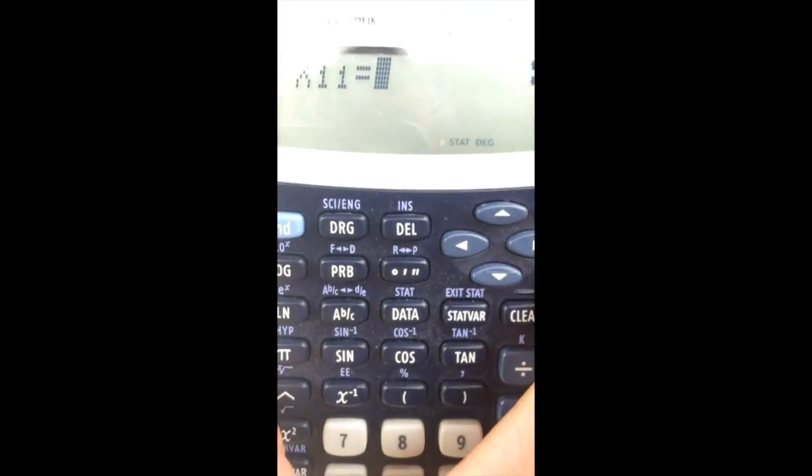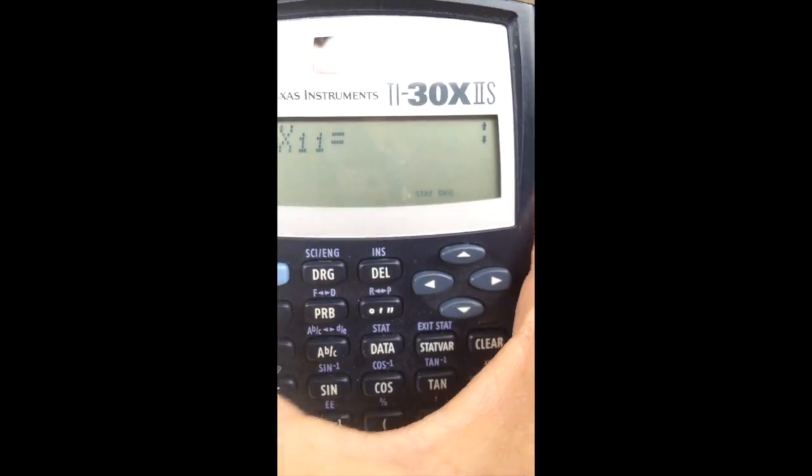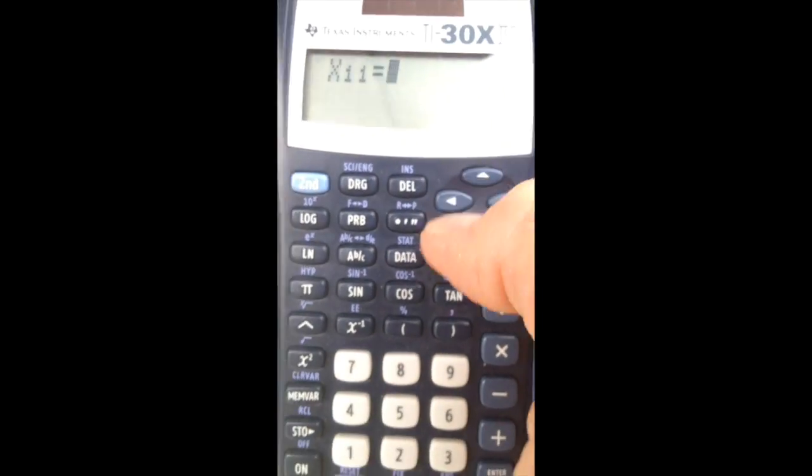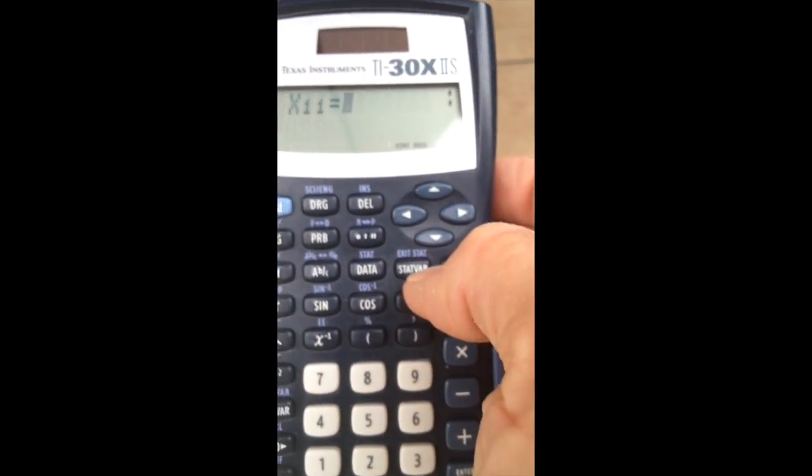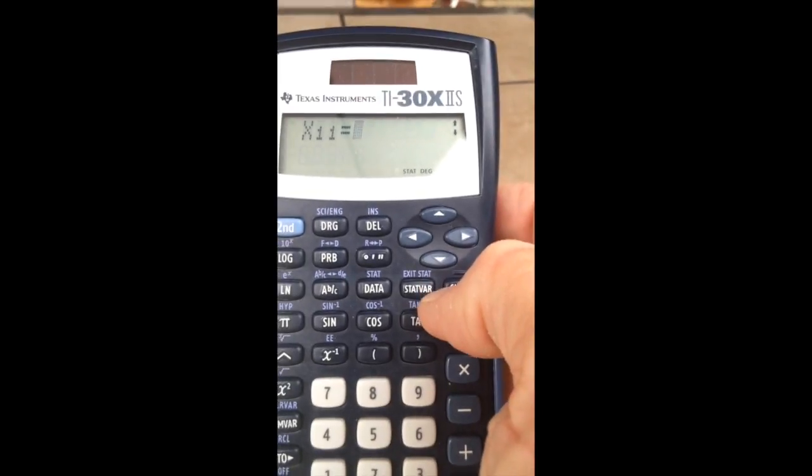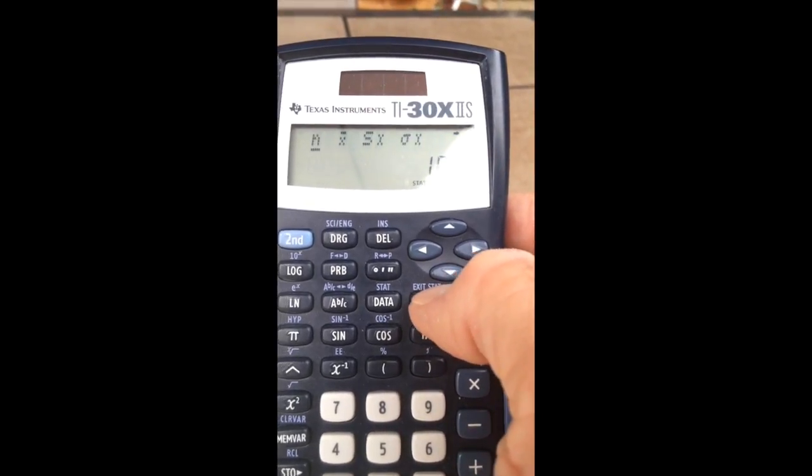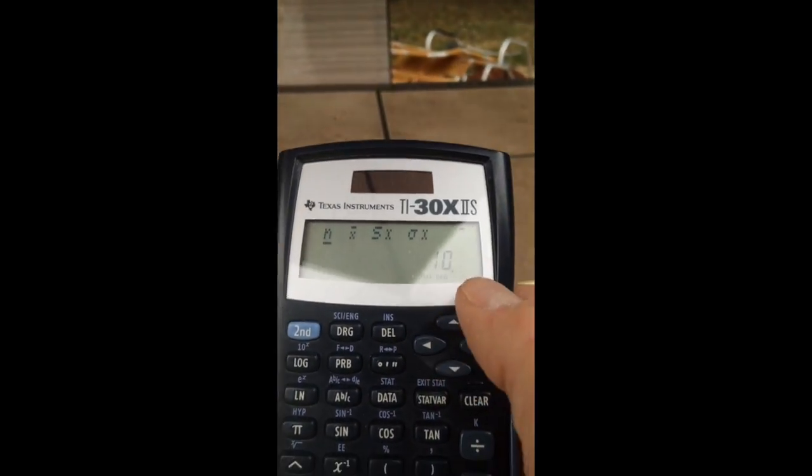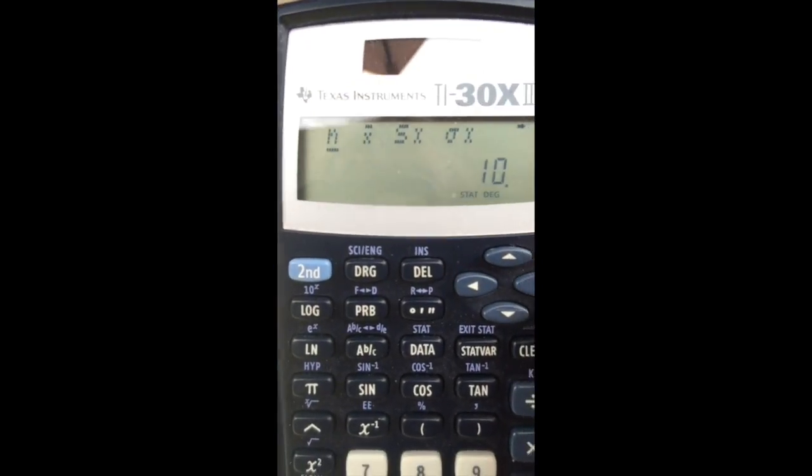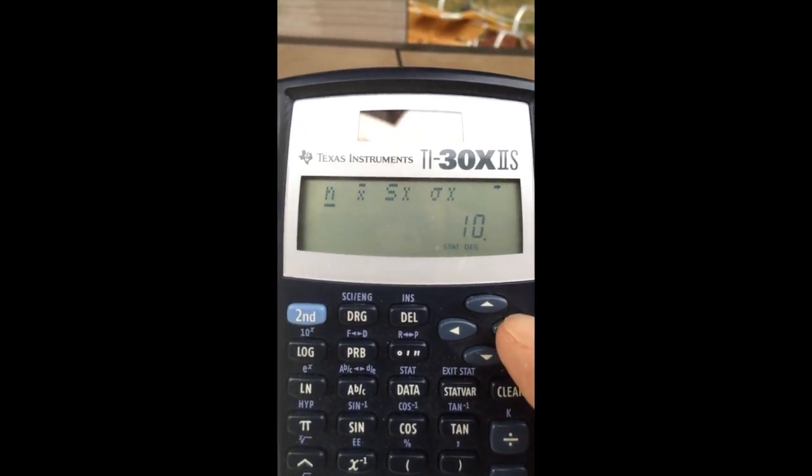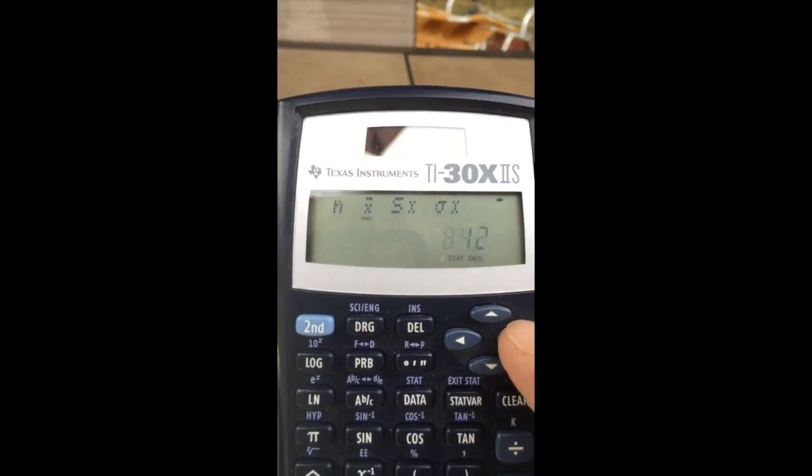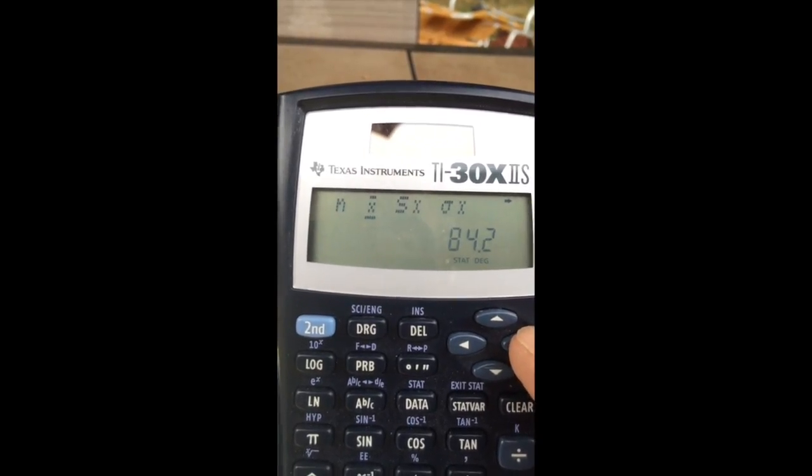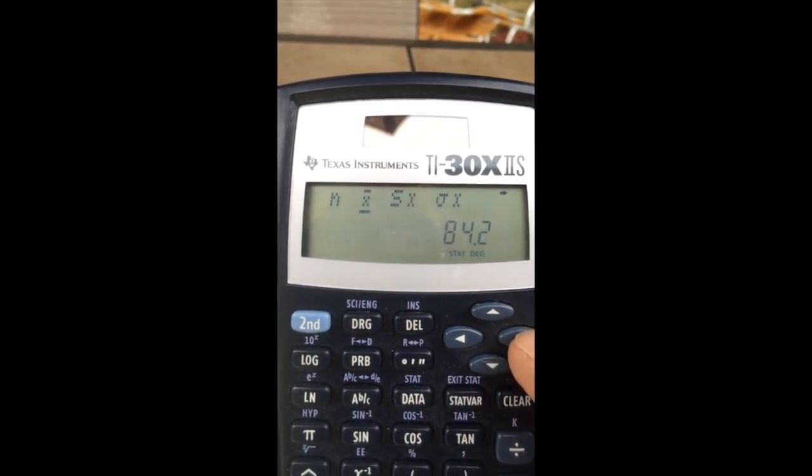Now, what I'm going to do is tell the calculator, show me the results. So I need to hit the button here, stat there, right there. Now it tells me everything. Let me try to hold this so you can see it. And I'm going to toggle with the right. And I've got 10 numbers.